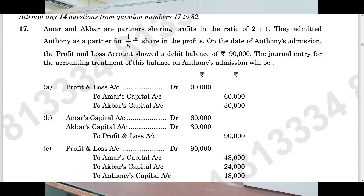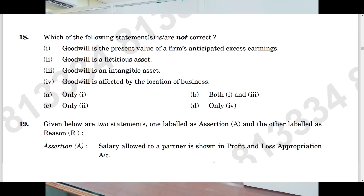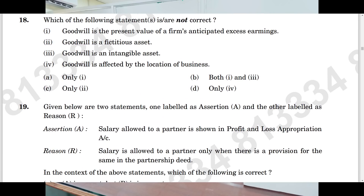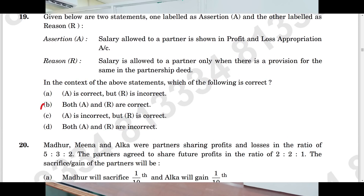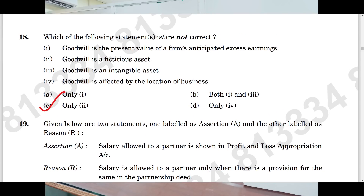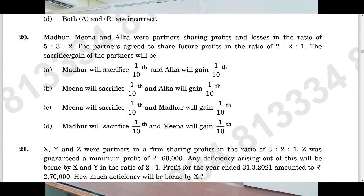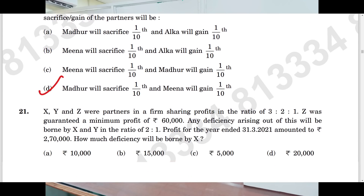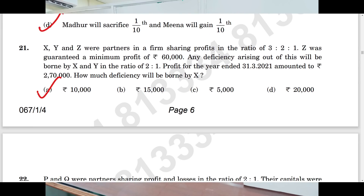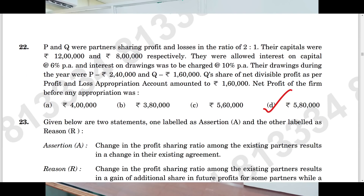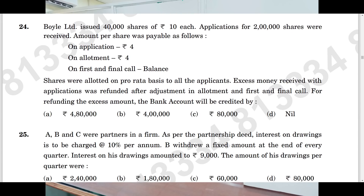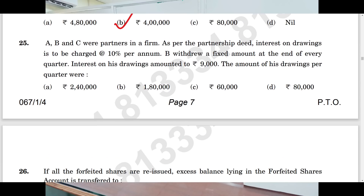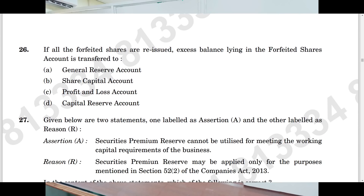Question number 17: option B is the answer. Question number 18: C. Question number 19: B — this is assessment and reasoning. Question number 20: D. Question number 21: A. Question number 22: D. Question number 23: A. Question number 24: B. Question number 25: C. Question number 26: D.